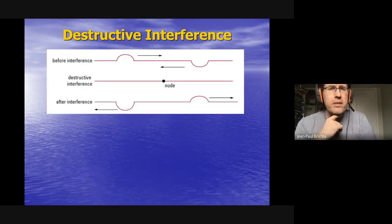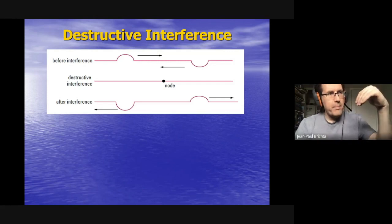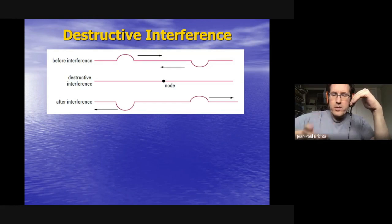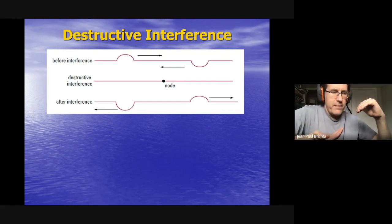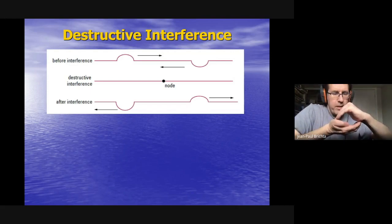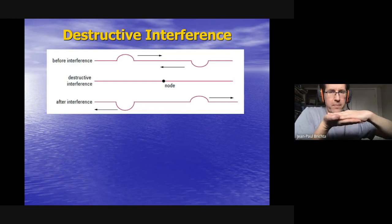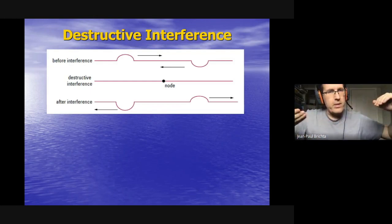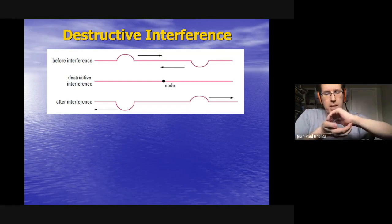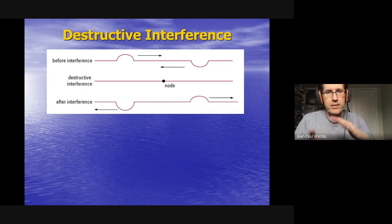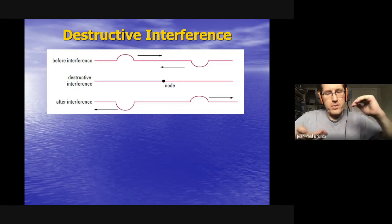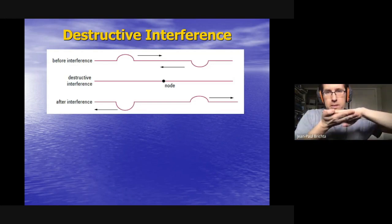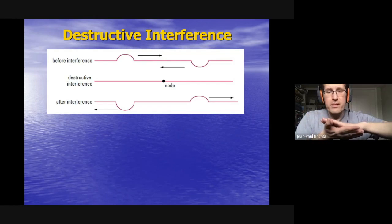Destructive interference is totally different — it means something smaller results. It happens when a crest meets a trough. When these two overlap, they create a node — it's like the wave doesn't even exist momentarily. When they're the same amplitude but one is a crest and the other a trough, with exactly the same wavelength, meeting produces a node where the medium doesn't move at all.